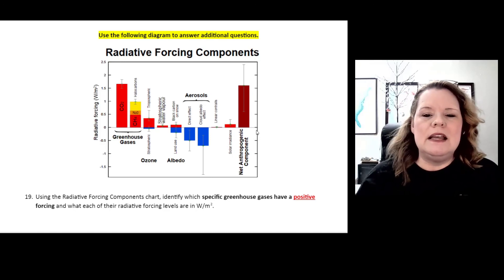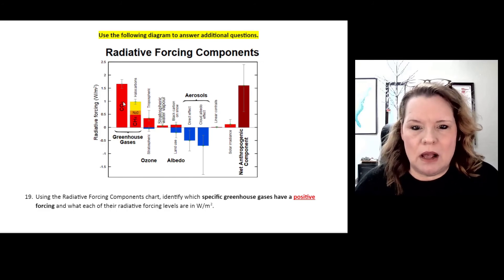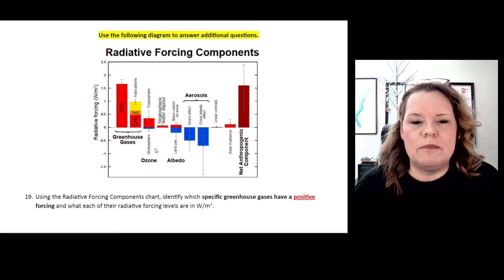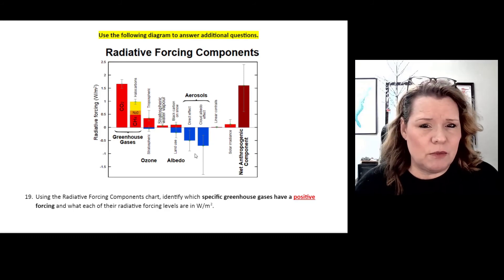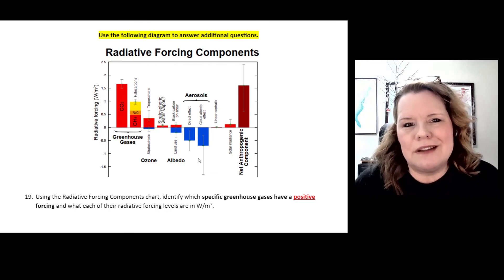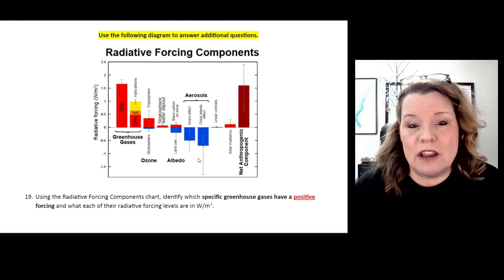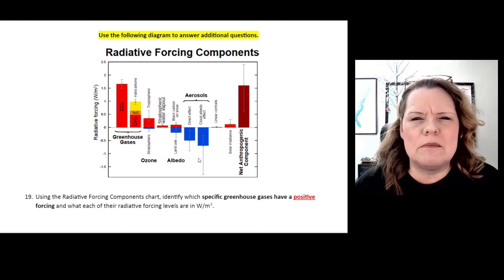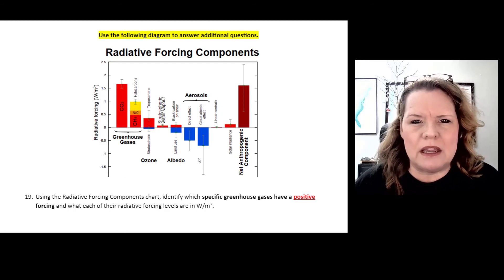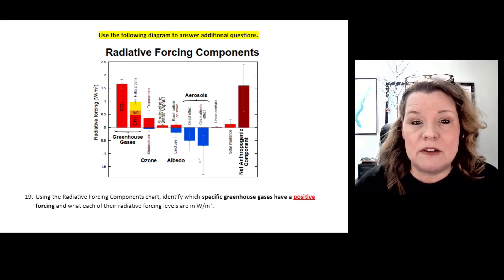If you notice the zero line on the x-axis basically measures in watts per square meter. At zero, that's a flat line. Anything that's above, that's a plus number above zero would be considered a positive forcing. Anything beneath it that has a negative number would be a negative forcing. And again, positive does not necessarily mean a good thing for climate.